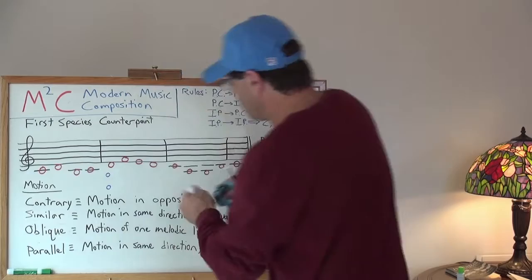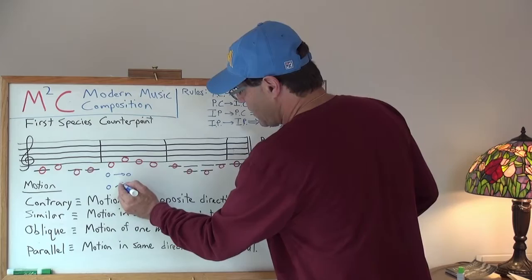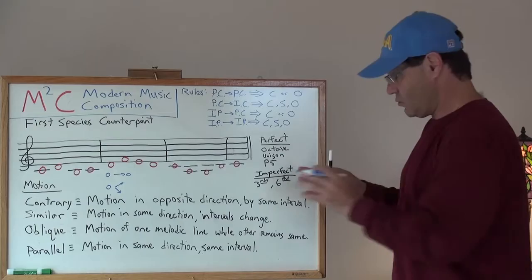Oblique motion means motion of one melody line while the other one remains the same. So this guy could remain the same, and this fellow could either go up or down, depending upon where you want it to go, with that tone row.